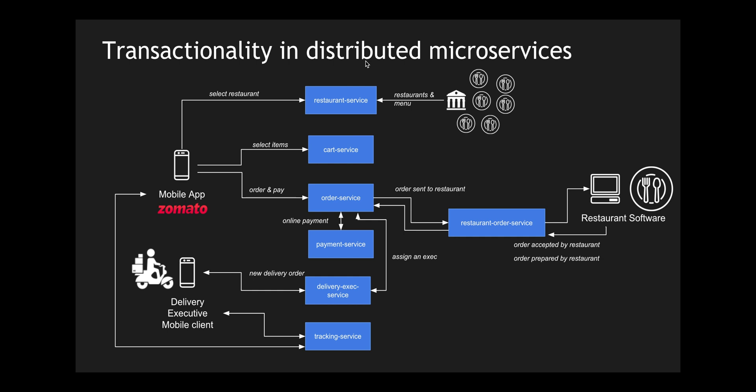The delivery executive goes to the restaurant and updates the app saying he is there — most of the time this happens automatically based on location. He takes up the order and changes the status from 'prepared' to 'picked up'. The delivery exec service updates the order service, the user is notified via the mobile app, and finally once the delivery executive delivers the order, the order service is updated saying the order has been delivered.